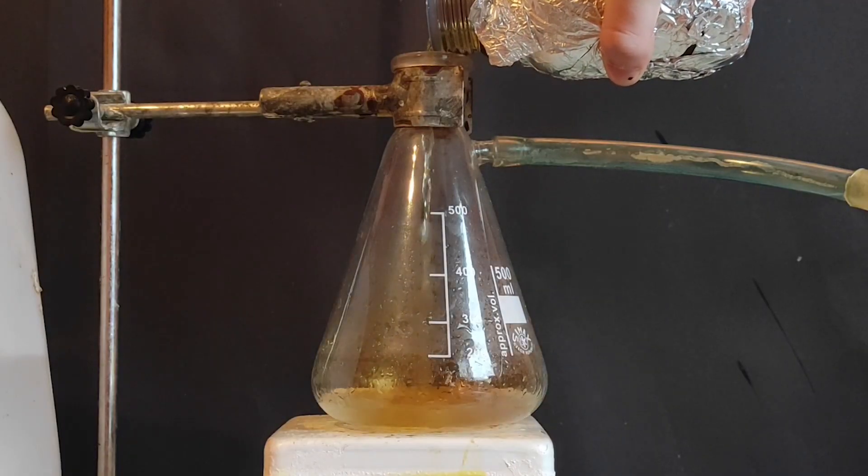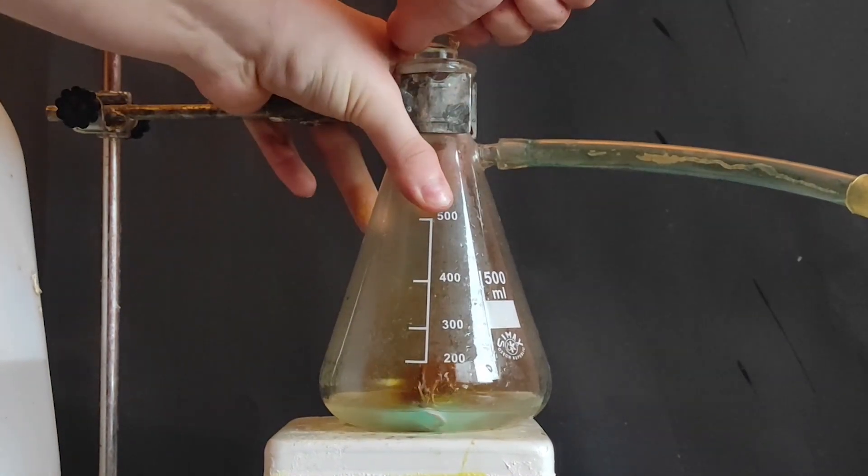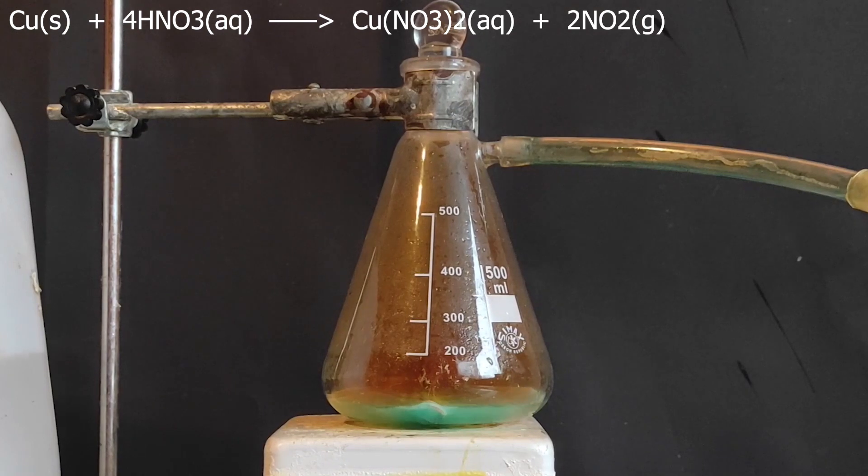And as we all know, 100% nitric acid can't dissolve metals. So when everything was ready I've dropped in the copper metal and stoppered the flask. What's happening here is the nitric acid oxidizes the copper into copper nitrate, which is soluble in water. This reaction produces some nitrogen dioxide, which is a toxic gas and it escapes through the tube to outside.